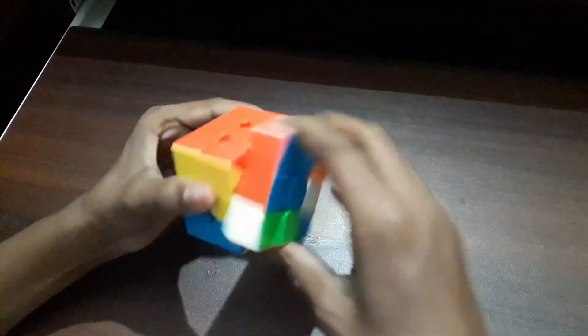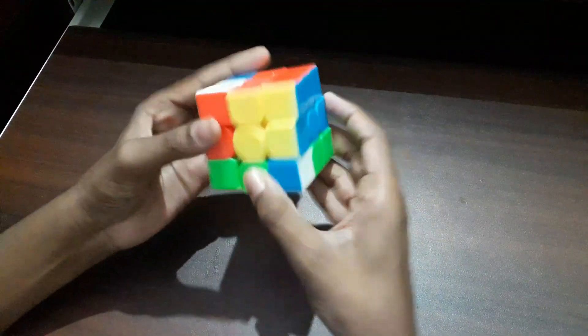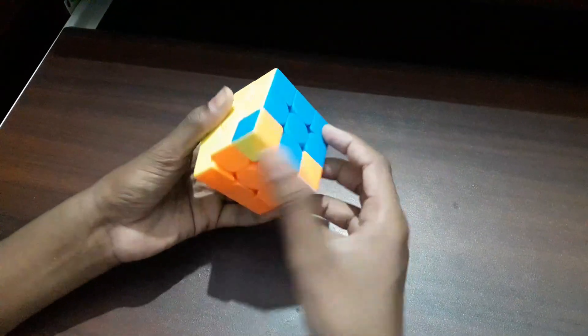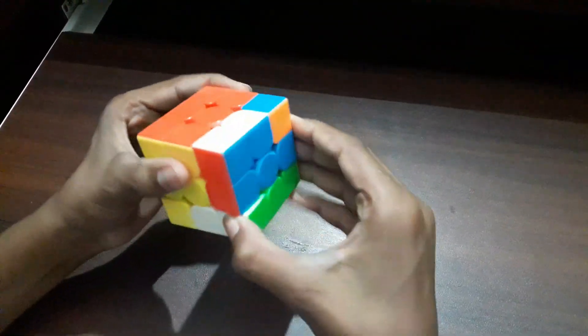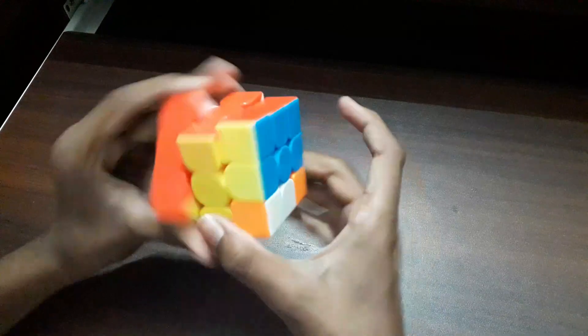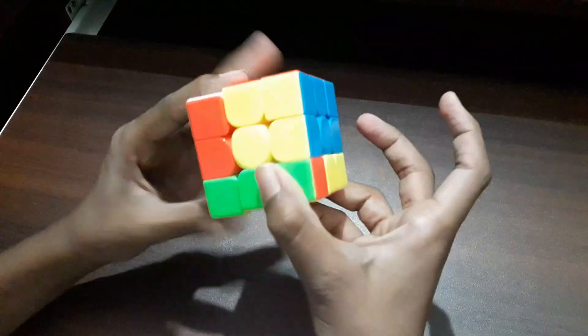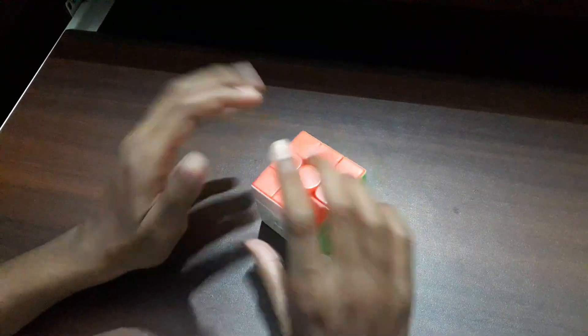Now we have got something like this. You all know how to solve it further but let me show you again. Use the same method. Okay, so now let us do the same step again. And there we go. The cube is solved.